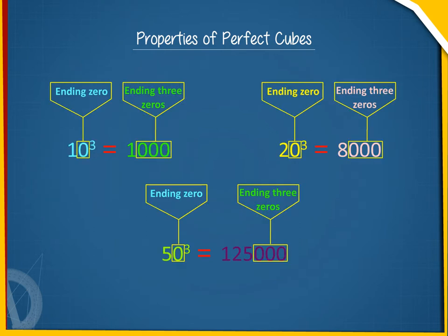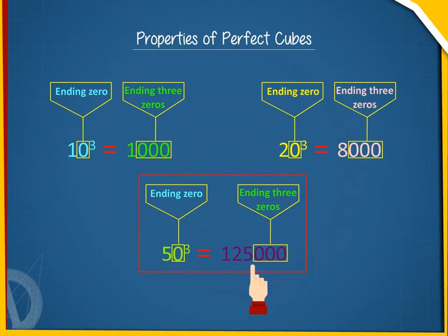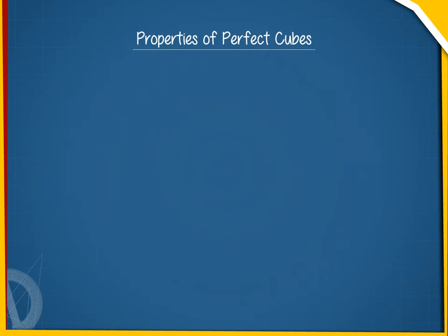Property 3: The cube of a number ending with 0 ends with three zeros. For example, 10³ = 1000, 20³ = 8000, 50³ = 125,000.